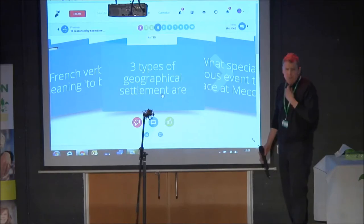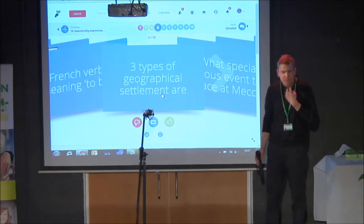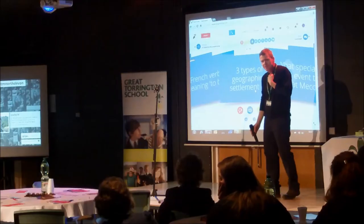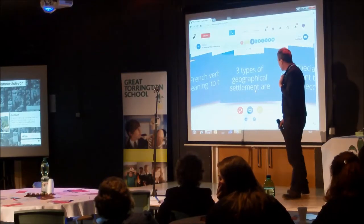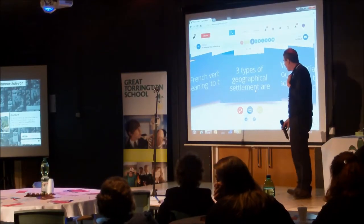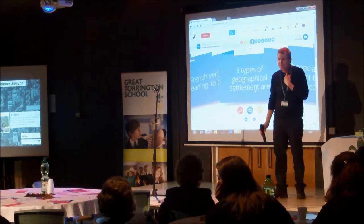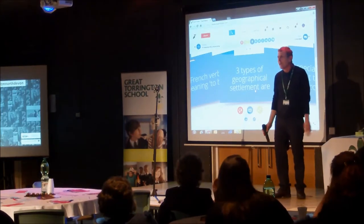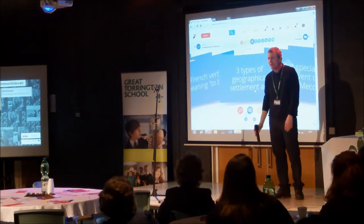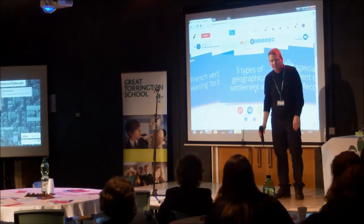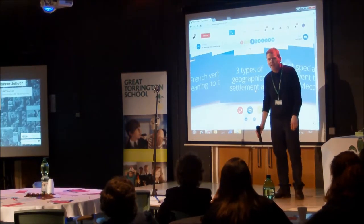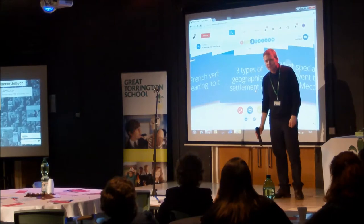Three types of geographical settlement — have you got any geographers here? Three types of geographical settlement: Linear. Have you got any others? Nuclear. Any others? Dispersed.